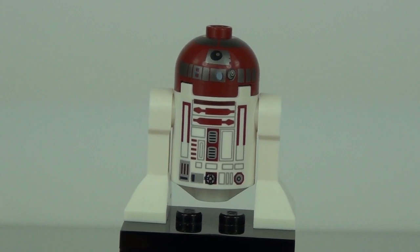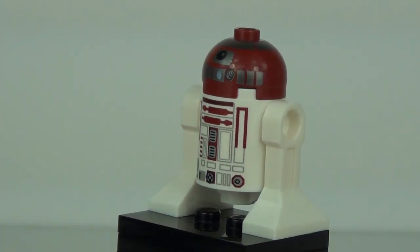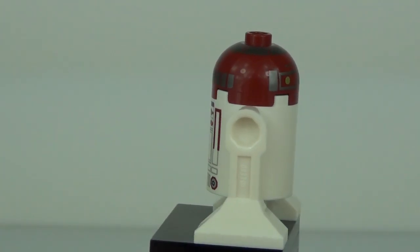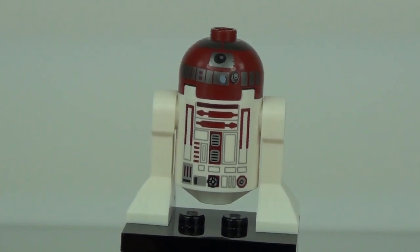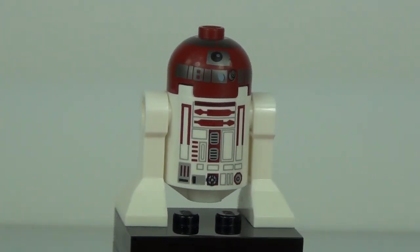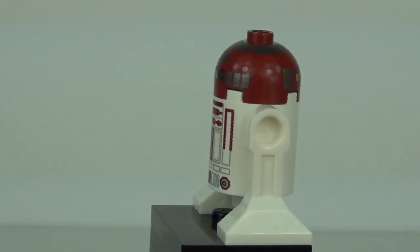Here is your minifigure R4-P17, the Astromech Droid. This is the debut edition of this minifigure. Not the dome. The dome has appeared in other sets. But this is the first time we have had a body and legs to connect to that dome. And so for that it is a very exciting minifigure.